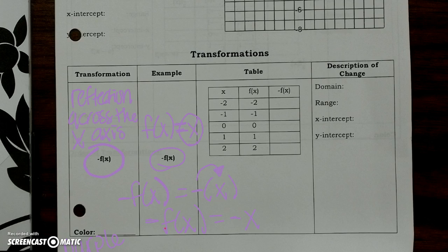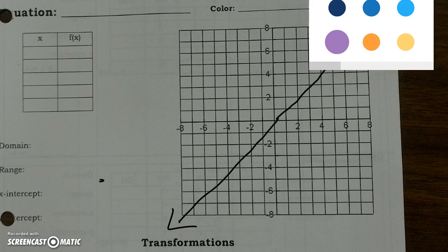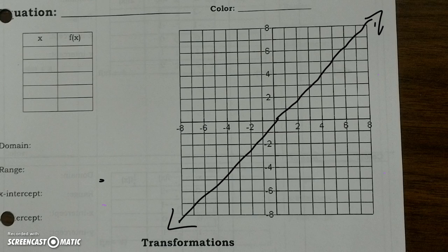Now we're going to graph this. To graph this, our b — our y-intercept — is zero, since nothing is added next to the x. My m is negative one. As rise over run, that's negative one over one. So I'm going to start at my y-intercept at zero, then go down one and to the right one. Going the opposite direction: up one and to the left. Go ahead and connect the dots to make the line.